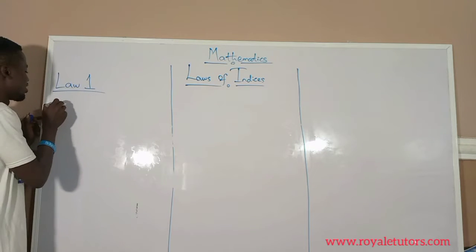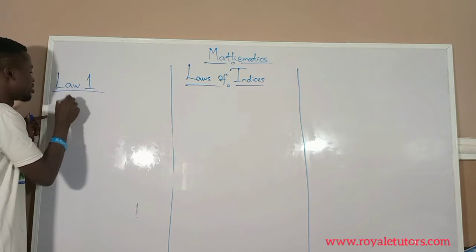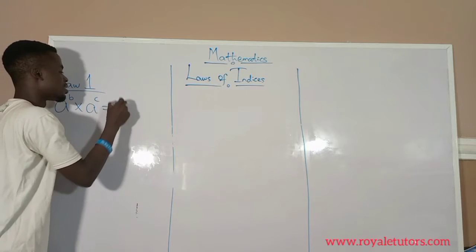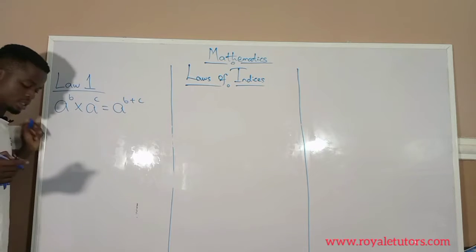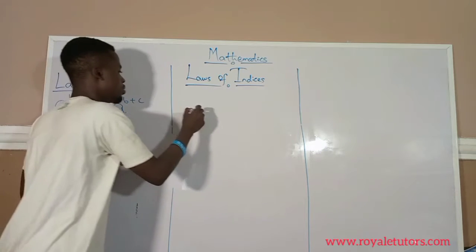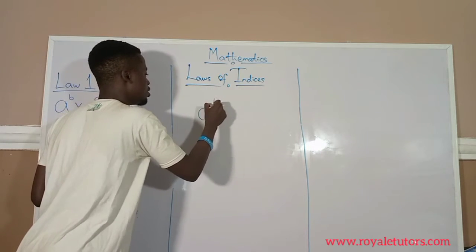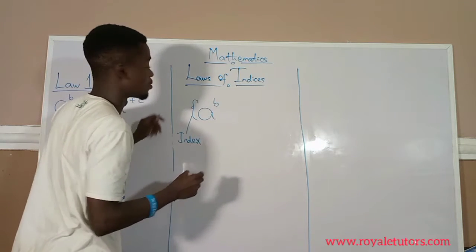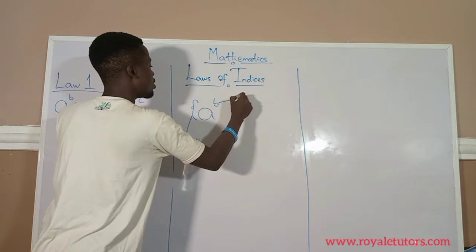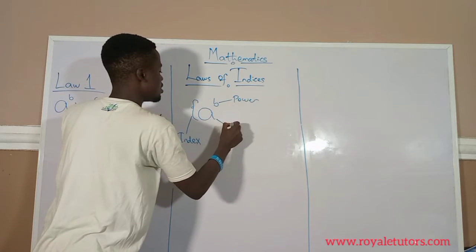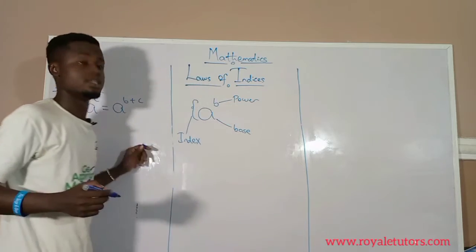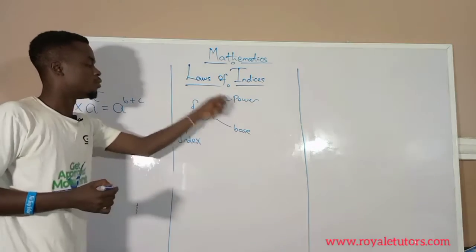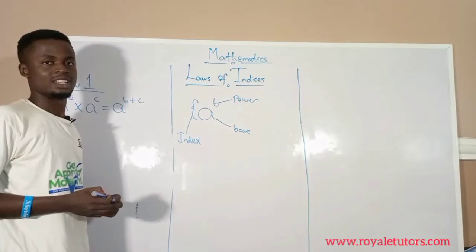The first law says that a raised to power b multiplied by a raised to power c is the same thing as a raised to power b plus c. I need to explain something first. This is called index form. This is the power, and this is the base. Whenever I say base, I mean this one. Whenever I say power, I mean this one. All of it together is an index form.